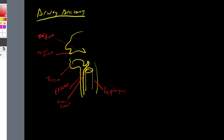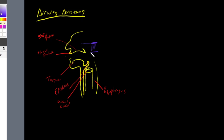We're going to divide our airway anatomy into three regions. The first region is going to be called the nasopharynx. The zone of the nasopharynx is going to be from the base of the skull to your soft palate. So this area right over here is going to be called your nasopharynx.